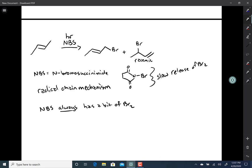NBS always has a bit of bromine present. So, how this reaction works is light has enough energy to break the bromine-bromine bond in half. Each bromine gets an unpaired electron. This is the initiation step, and this only has to occur seldom in order for this reaction to proceed.